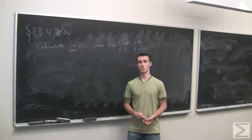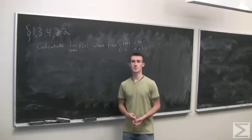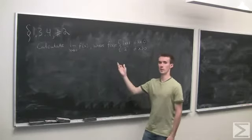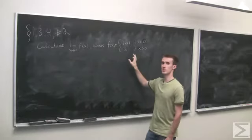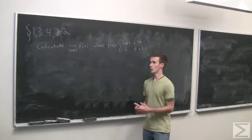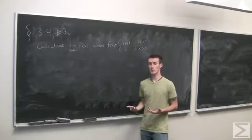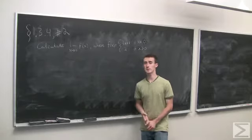Problem number two of section 1.3.4 asks us to calculate a limit where we're taking the limit as x goes to zero of this piecewise defined function. When we're asked to calculate a limit, we may be looking for a certain number or we may be checking to see does this limit actually exist?